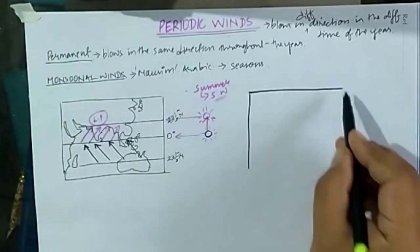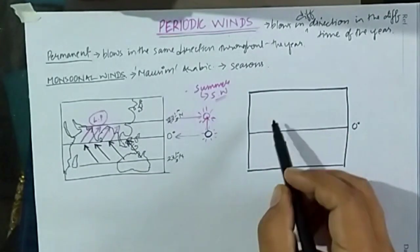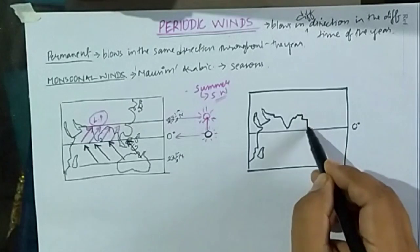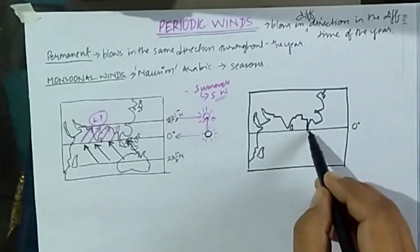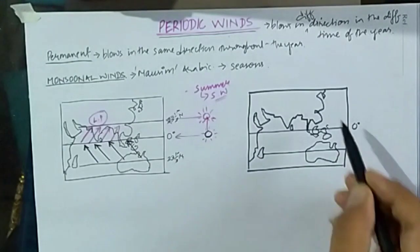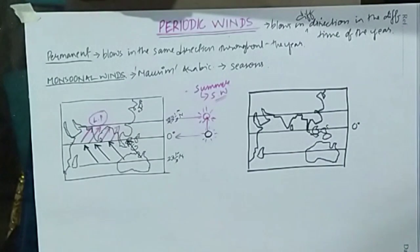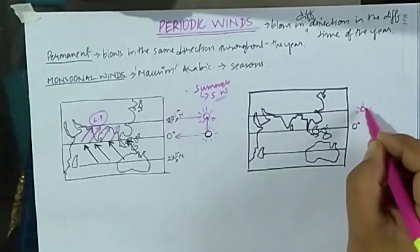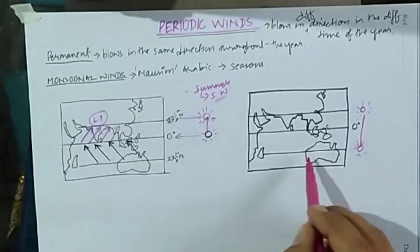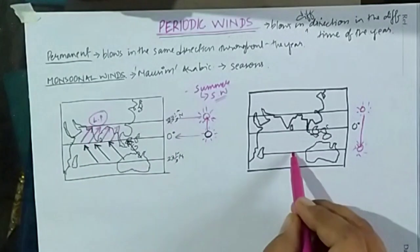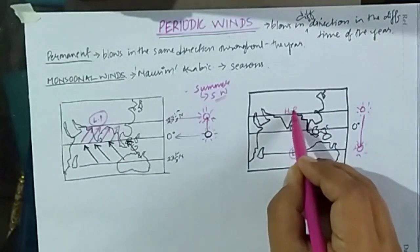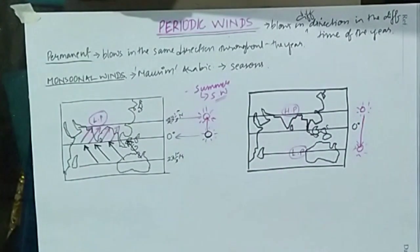During the winters the scenario is quite different. Due to the apparent movement of the sun, during winters the sun will no longer remain over the Tropic of Cancer - it gradually shifts towards the Tropic of Capricorn. There will be a replacement of high and low pressure. The low pressure now forms over the Australian areas, and the low pressure over the Tropic of Cancer is replaced by high pressure.